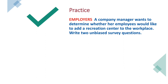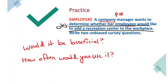Practice designing your own survey — think about the objective, the population, and write two unbiased questions. For the rec center example: the population is company employees, the objective is to determine whether employees would like to add a rec center at the workplace, and two unbiased questions could be 'Would it be beneficial?' and 'How often would you use it?' — straightforward, with no added bias like calling it 'amazing' or 'great.'